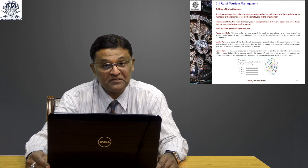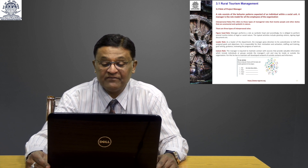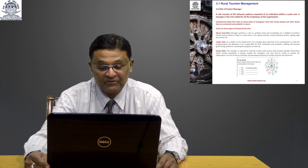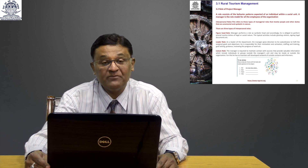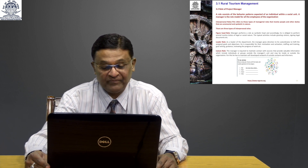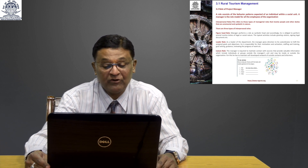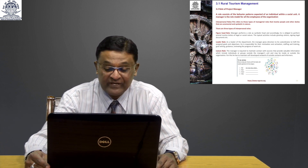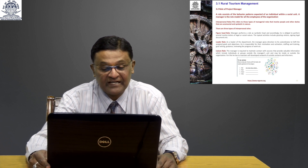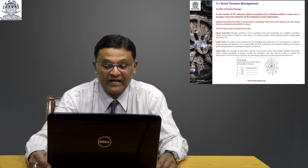Figurehead role: the manager performs as symbolic head and is obliged to perform routine duties of a legal and social nature, such as greeting visitors and signing legal documents. Leader role: as leader of the department, the manager gives direction to subordinates to fulfill assigned goals and objectives, responsible for their motivation and activation, staffing and training, goal setting, guidance, and reviewing progress. Liaison role: the manager maintains contact with sources providing valuable information — individuals or groups outside the manager's unit, inside or outside the organization.